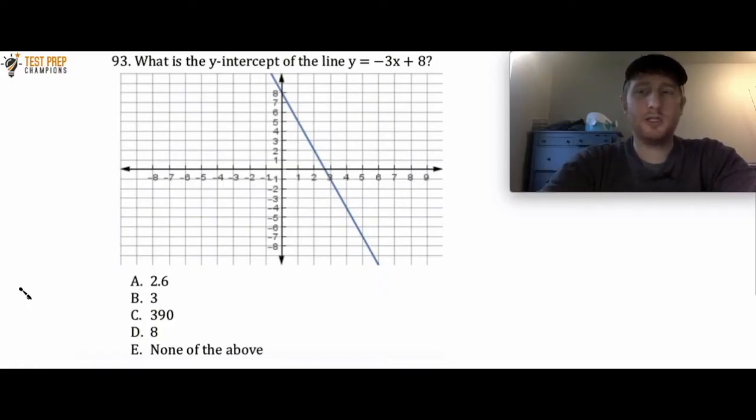Okay, hopefully you had a chance to try this if you wanted to. So basically, the y-intercept is where the line crosses the y-axis. Now, the y-axis is the axis on our graph here that goes up and down, and in contrast, the x-axis is the axis that goes left and right.